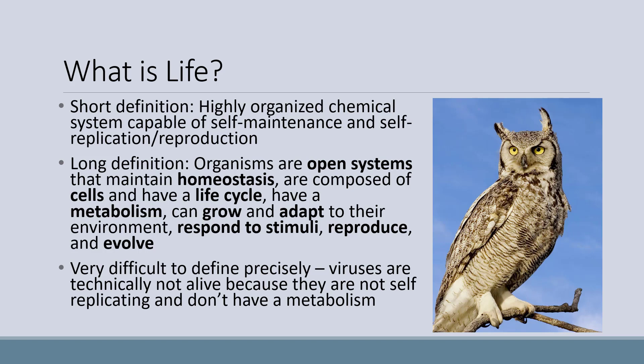Let's define life. The short definition is that life is a highly organized chemical system capable of self-maintenance and self-replication, or reproduction. The long definition is that organisms are open systems that maintain homeostasis, are composed of cells, and have a life cycle.